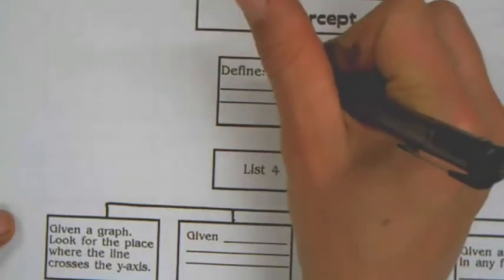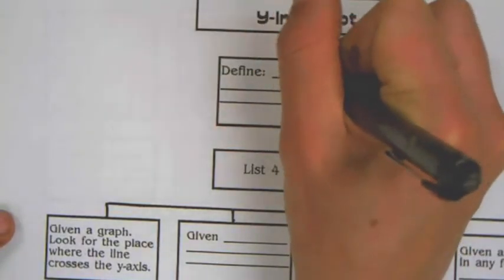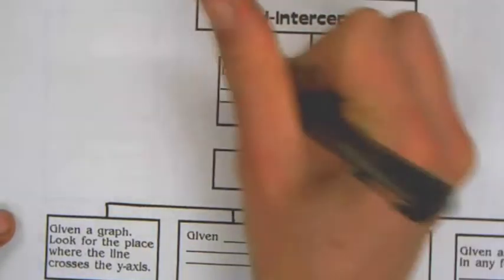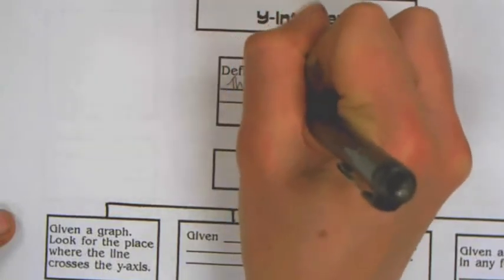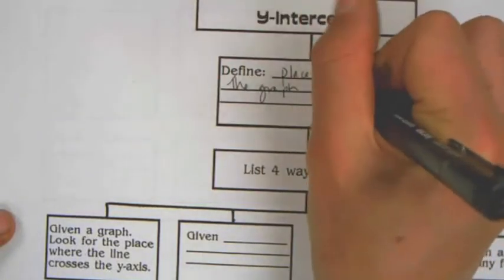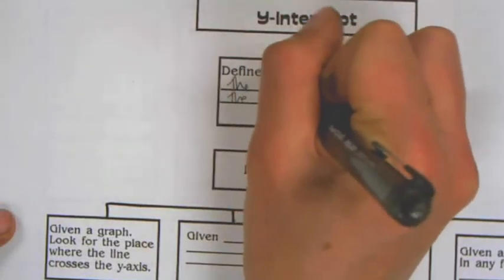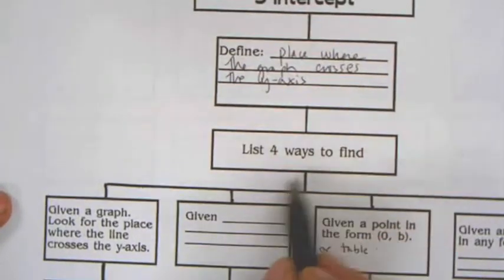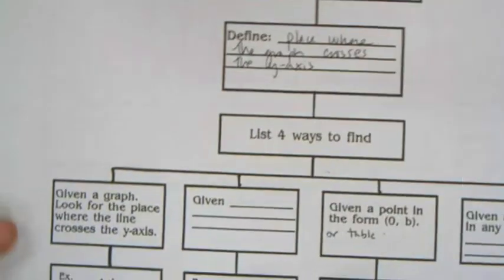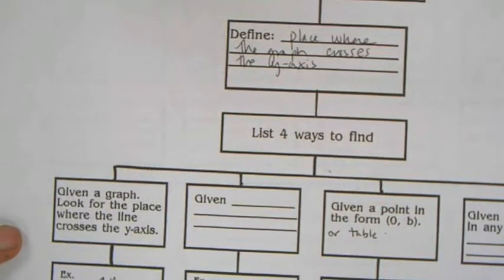First off, a y-intercept is the place where the graph crosses the y-axis. There are a couple of ways - these are just four ways highlighted in this graphic organizer.